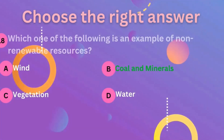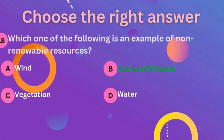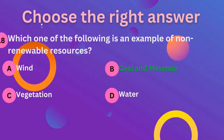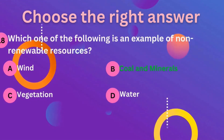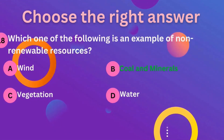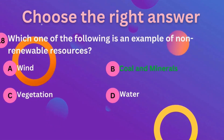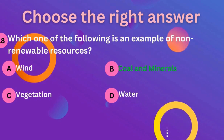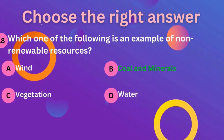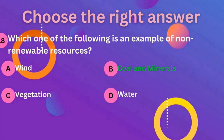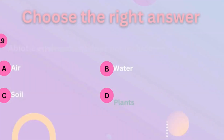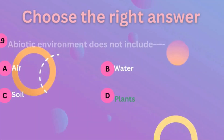Question 18: which one of the following is an example of non-renewable resources? Coal and minerals are non-renewable resources. So B is the correct answer.